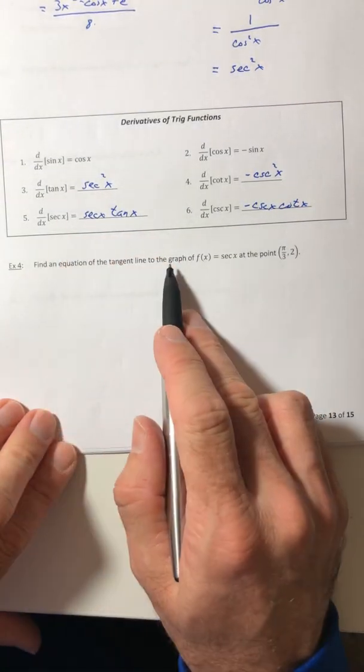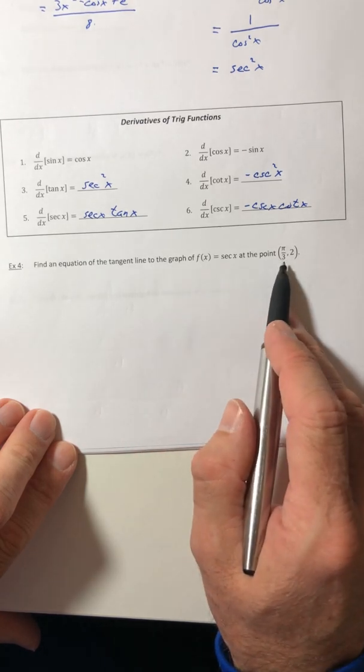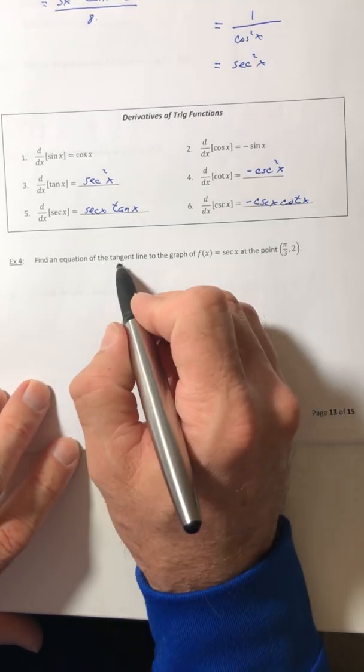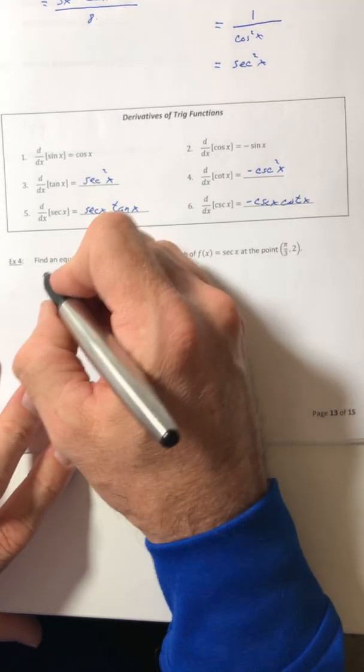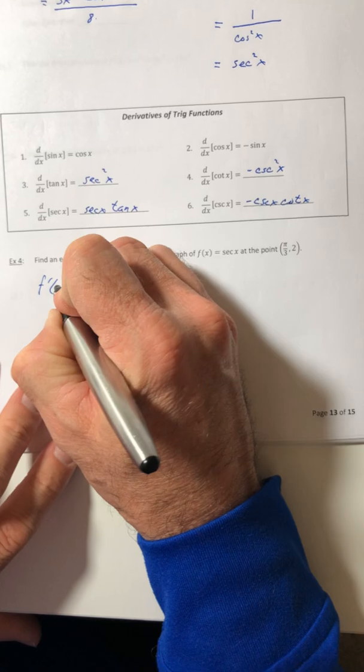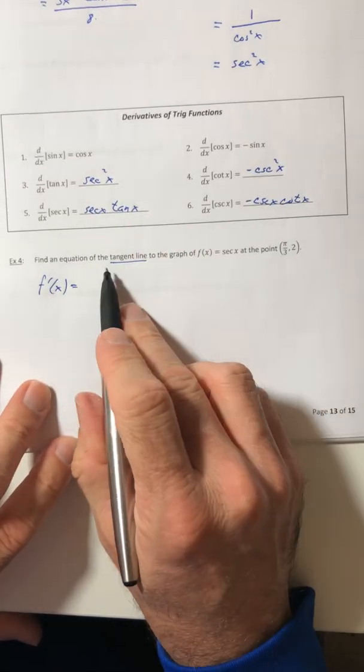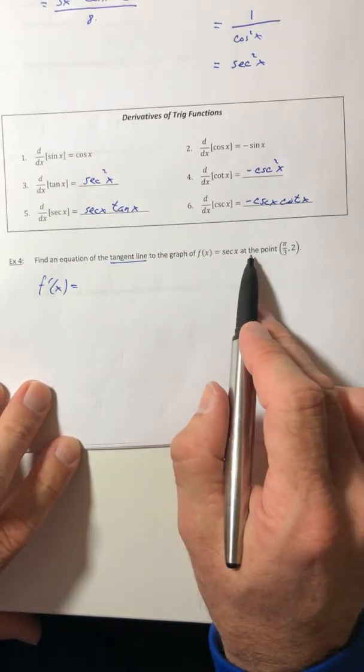Okay, find the equation of the line tangent to the graph of secant at the point pi over three comma two. So find the equation of the tangent line. So tangent line means derivative because I need the slope of it. So the derivative of secant secant tangent.